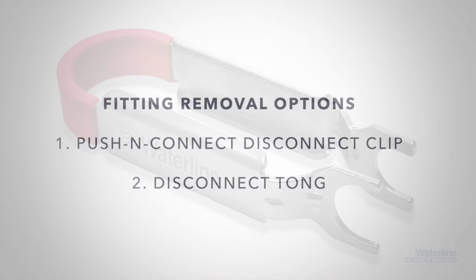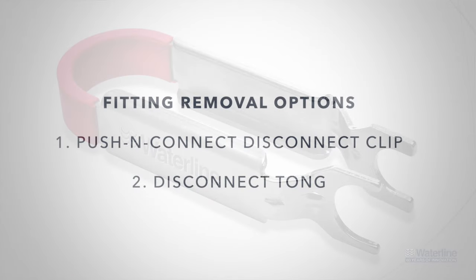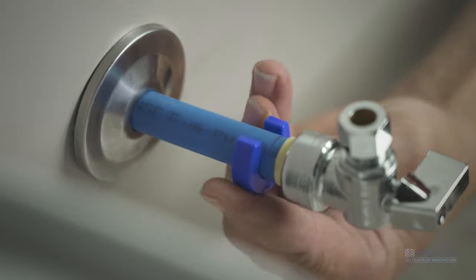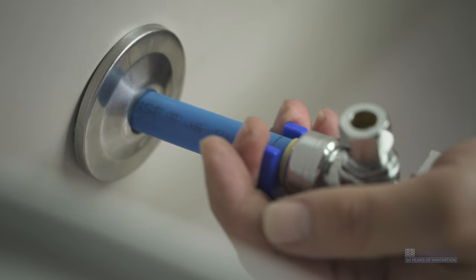To remove the fitting, you can use either a push and connect disconnect clip or a disconnect tong. If using a disconnect clip, place it onto the pipe and press down onto the fittings release collar. Then simply pull the pipe out of the fitting.